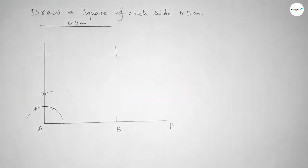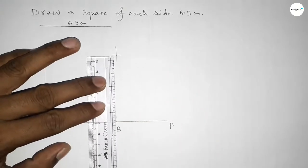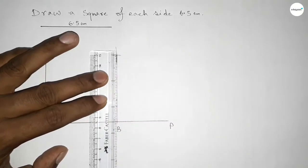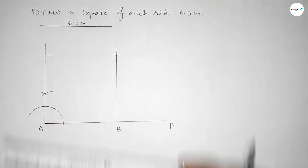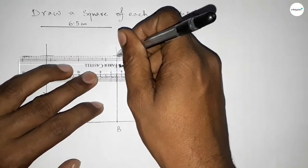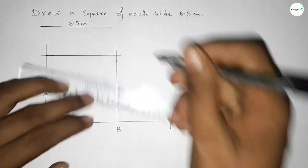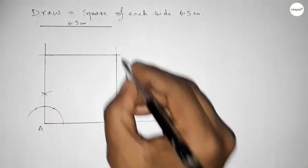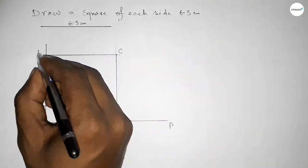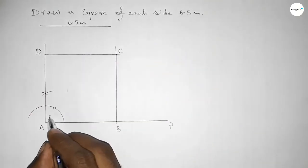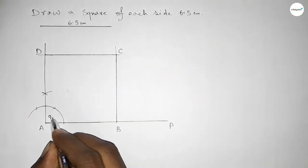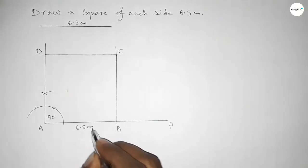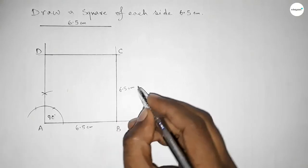Now draw this side, then join this side to get the square. Taking point C and point D here — this angle is 90 degrees, and this side is 6.5 centimeters, this side is 6.5 centimeters.